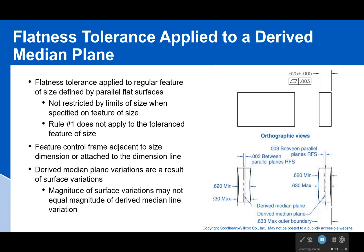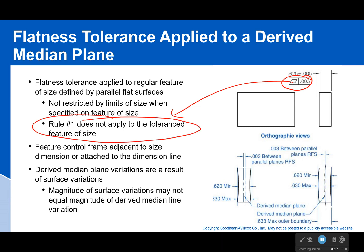Now let's talk about when we have flatness tolerance applied to a derived median plane. When we're doing this, you're going to see it with the flatness right next to the size dimension, so that flatness tolerance applies to that size dimension. Remember, when we do this, Rule Number One does not apply anymore to this toleranced feature of size. So it's no longer restricted by the limits of size — it's restricted by the flatness tolerance.